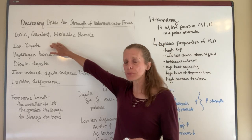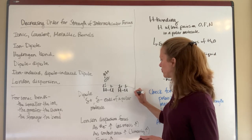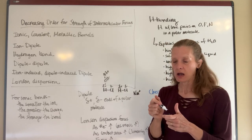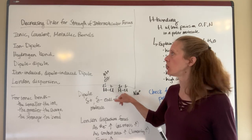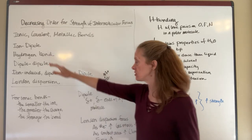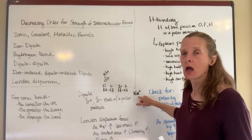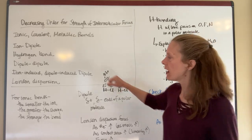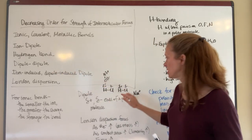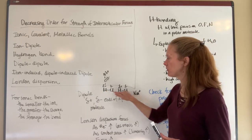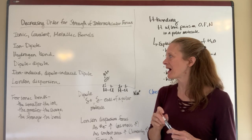An ion-dipole interaction means that if I throw an ion into the mix — say a positively charged sodium ion — the sodium ion is going to be attracted toward the negative end of the polar molecule. That's an ion-dipole interaction: a polar molecule with positive and negative ends interacting with an ion that happens to be in solution. A dipole-dipole interaction is what I described with hydrogen chlorides orienting so that the partial negative is attracted to the partial positive end.